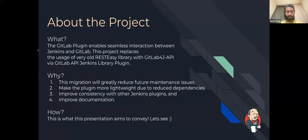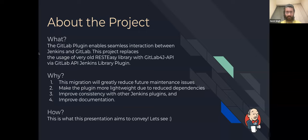GitLab is a fast-growing modern DevSecOps platform that has evolved quite a lot in recent years, but unfortunately Jenkins couldn't keep up with it. The GitLab plugin enables seamless interaction between Jenkins and GitLab. This project is about replacing the usage of the very old REST-Easy library with the GitLab4J API via the GitLab API plugin. This will greatly reduce maintenance issues, make the plugin more lightweight since GitLab4J requires far fewer manual dependencies, improve consistency with other Jenkins plugins, and most importantly improve documentation.